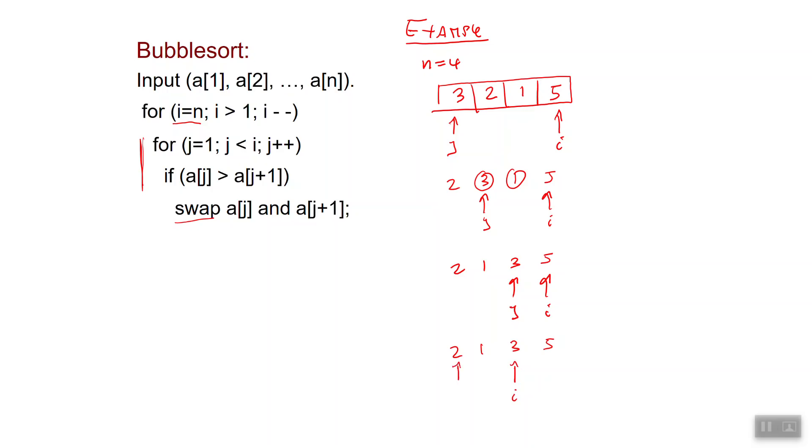And j again starts from the beginning. Again I perform a swap. Let me continue the example here. I perform a swap, so I get 1, 2, 3, 5, where my i points at 3 and j now will point at 2. I do not perform any other swap, so I'm done again with an iteration of the inner loop, so I can now decrease i.